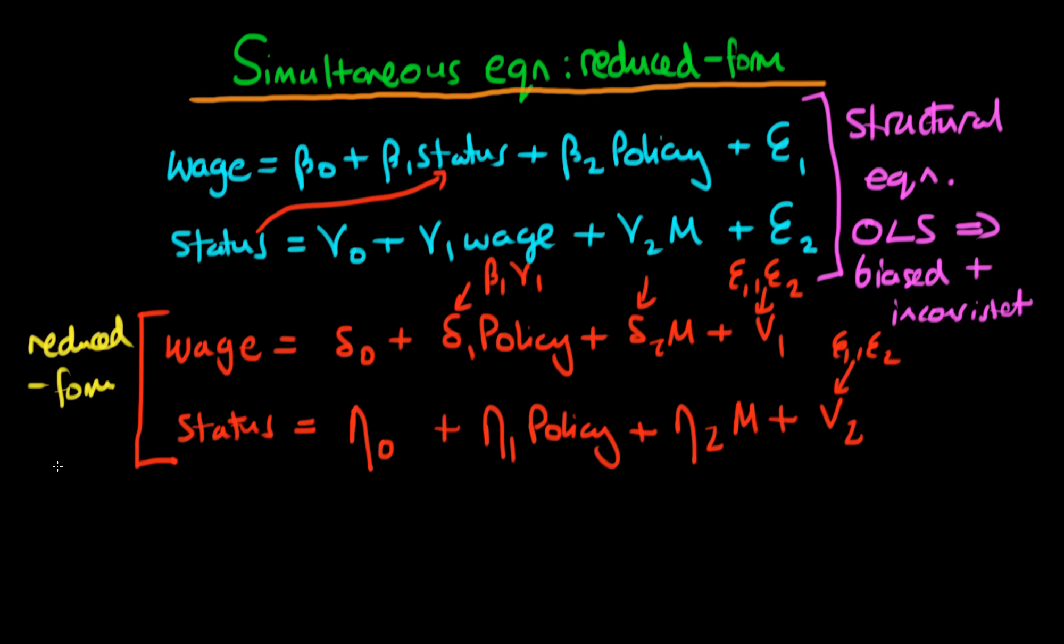But the benefit of these reduced form equations is that in general because policy and marriage are taken to be exogenous then we could in theory estimate these two equations via OLS and under the same set of Gauss-Markov assumptions which we've already stipulated, OLS would both be unbiased and consistent.